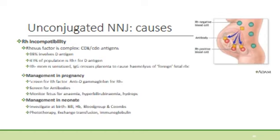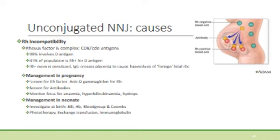A neonate who is haemolysing should be investigated for possible causes. One should consider firstly extravascular haemolysis and then intravascular haemolysis. Examples of extravascular haemolysis would be a cephalhaematoma or swallowed maternal blood, as those red blood cells still need to be broken down. In intravascular haemolysis, it can be either immune-mediated or non-immune mediated. The most common immune-mediated neonatal jaundice stems from RH incompatibility or ABO incompatibility. In non-immune haemolysis, one can consider conditions affecting the red blood cell membrane or cell processes, such as spherocytosis or G6PD deficiency.